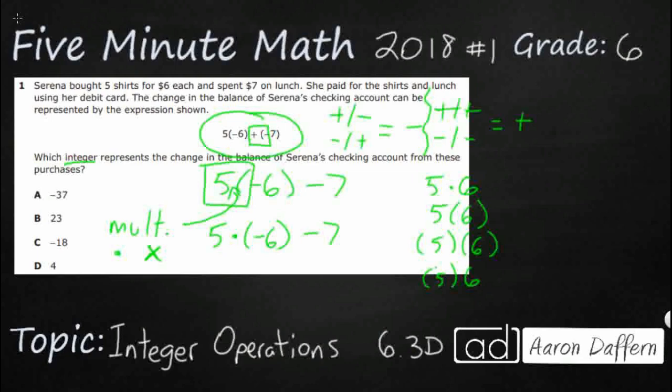So we've got the 5 times negative 6. Well, 5 times 6 is 30, and this is going to be a positive. If you don't see any type of positive or negative, you can always assume it's positive, and remember what happens. When we get a positive and a negative, that's going to make a negative. So it's negative 30 minus 7.